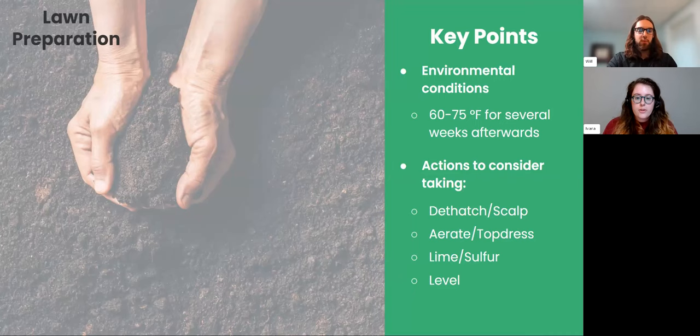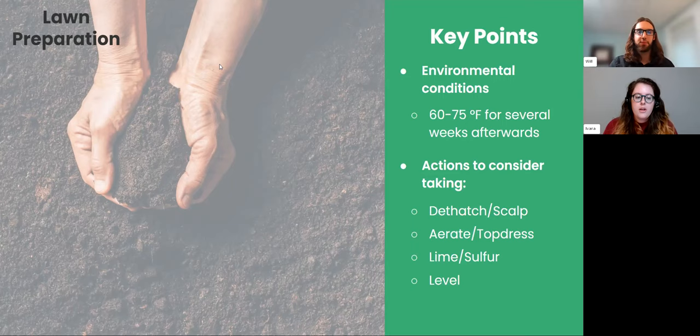If you've got a Bermuda or zoysia lawn, you may need to scalp it — that would be the first mow of the season, cutting it a little bit shorter just to remove dead material from your dormant grass over winter. This is only for Bermuda and zoysia. Scalping is a great way to make your lawn look better and improve health. Other grasses like St. Augustine are too thick to scalp — it will damage the stolons above the soil. Bermuda and zoysia usually have rhizomes under the soil, so you won't damage anything by cutting them short.